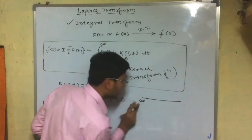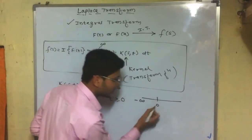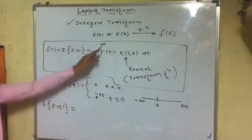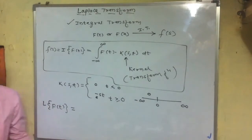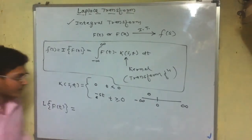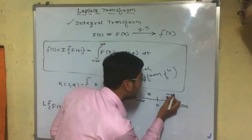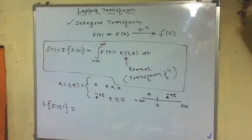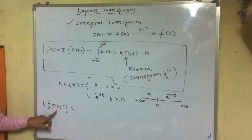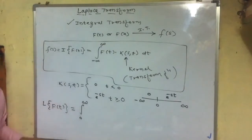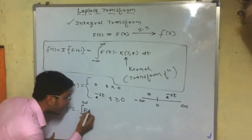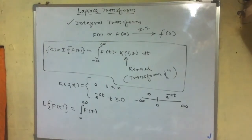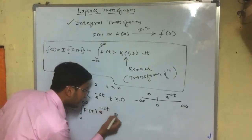The kernel is confined as follows: it equals 0 when t is less than 0, and equals e to the power minus st for all t greater than or equal to 0. This means the Laplace of F(t) is obtained by breaking the integral: from minus infinity to 0, the kernel is 0, so that part vanishes. From 0 to infinity, the kernel is e to the power minus st.